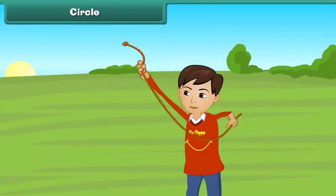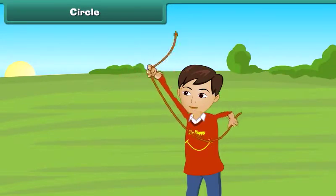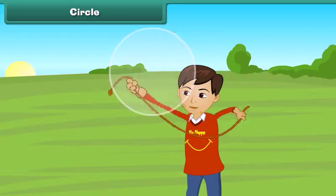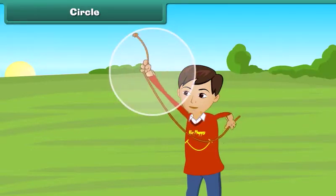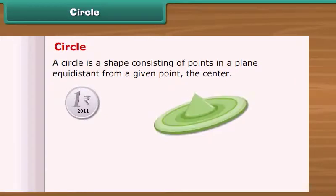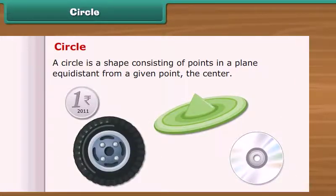Look what Sahil is doing. He is rotating the rope in the air. What shape the knot at the end of the rope is forming? It is circle. A circle is a shape, consisting of points in a plane equidistant from a given point, the center. One rupee coins, flying disc, wheel, CD, are circular in shape.